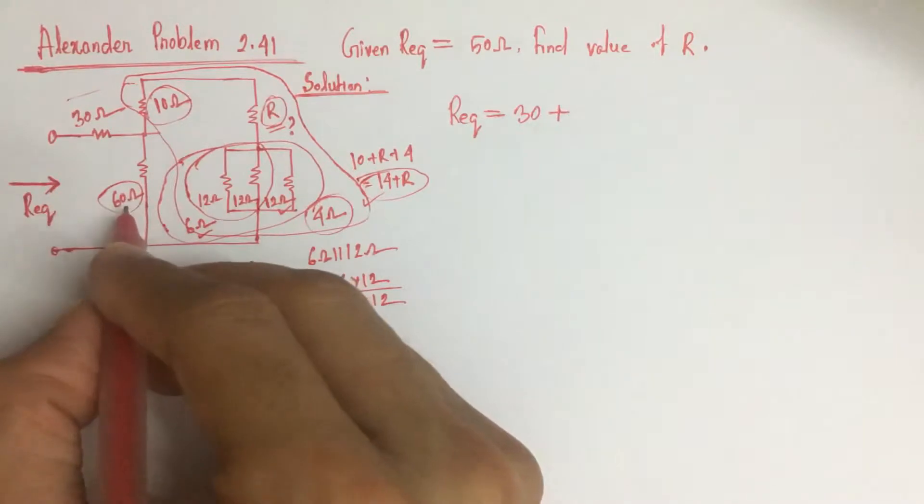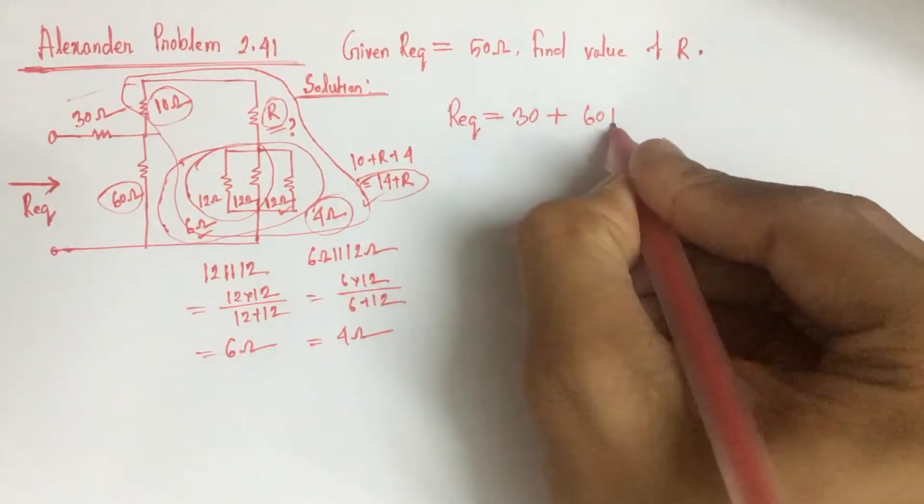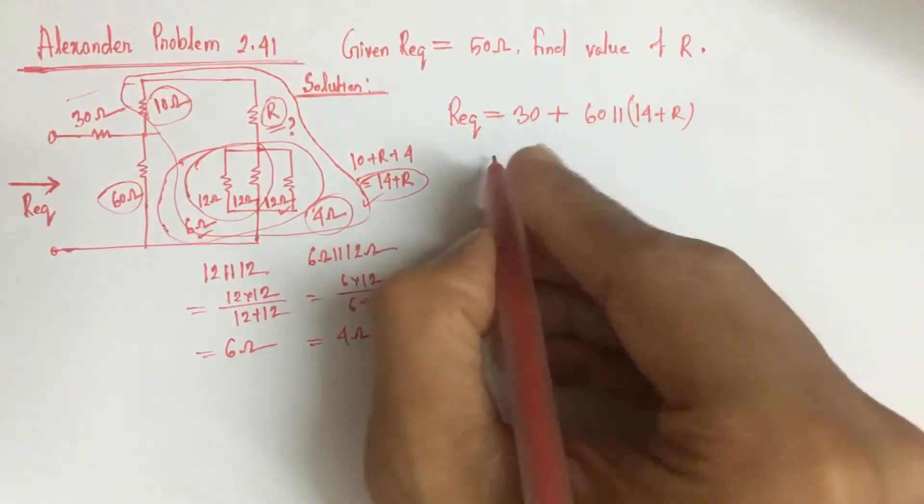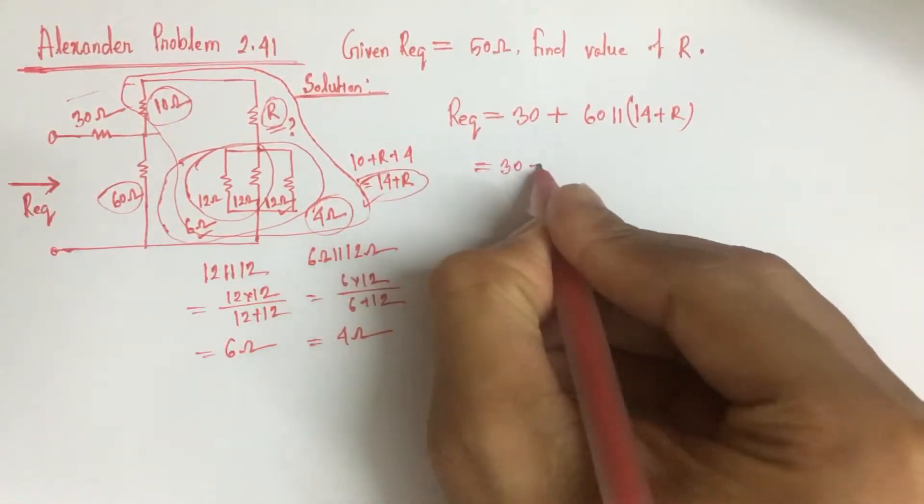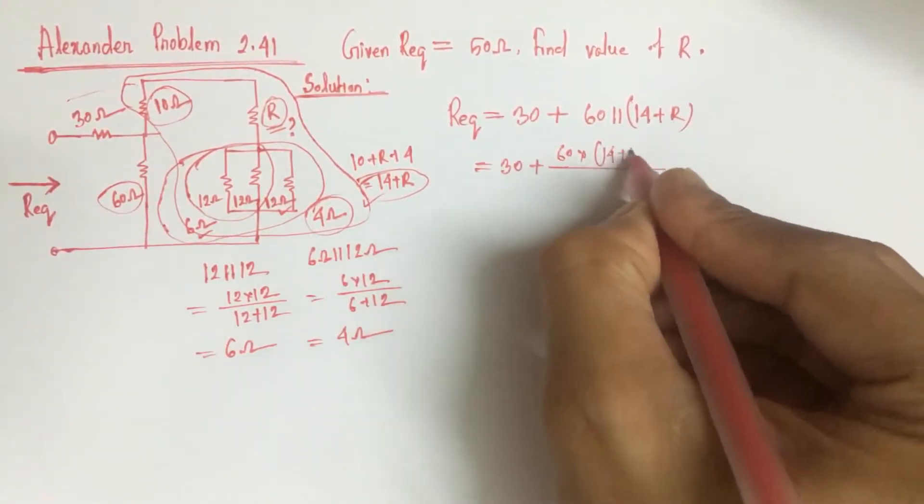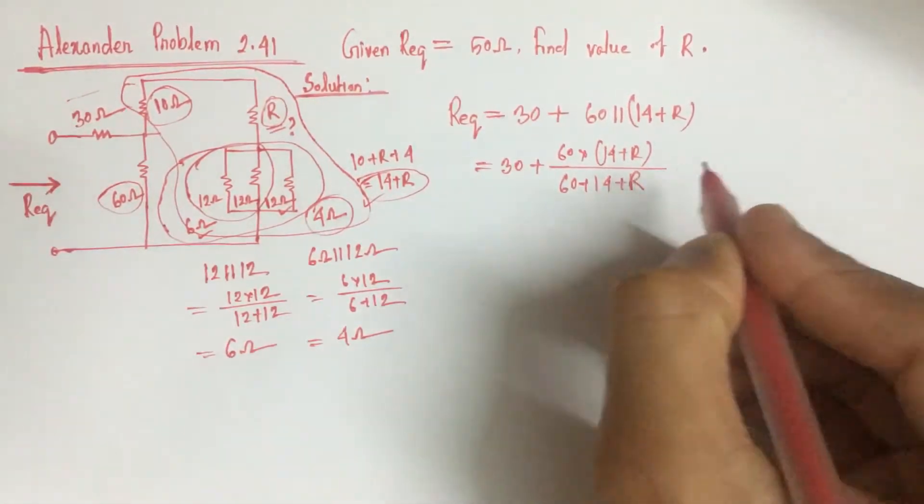This is 30 plus 60 parallel with 14 plus R, which is 30 plus 60 into 14 plus R by 60 plus 14 plus R.